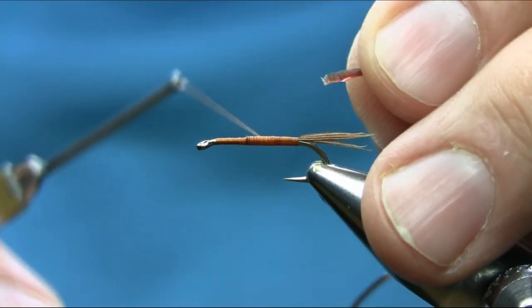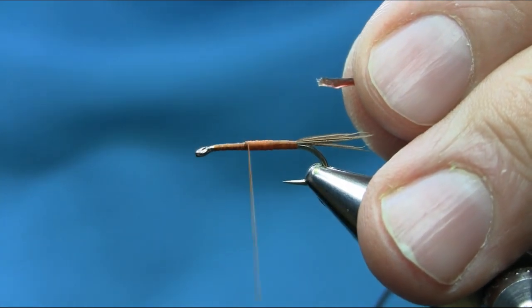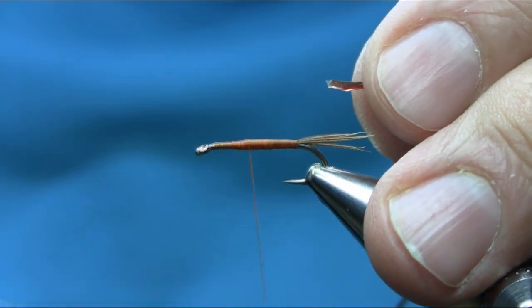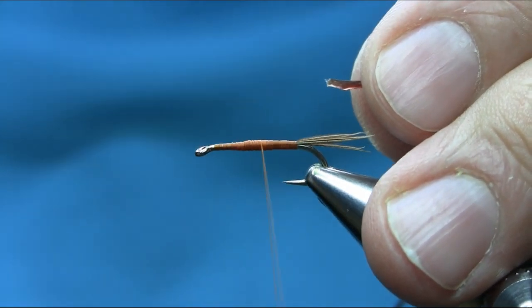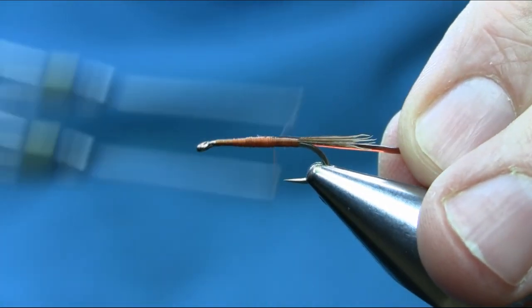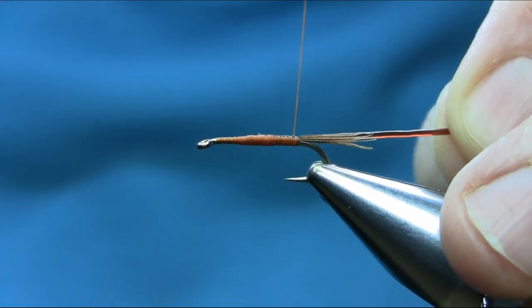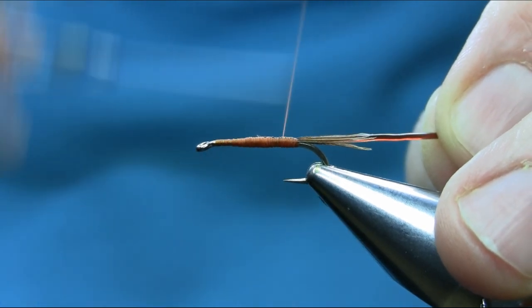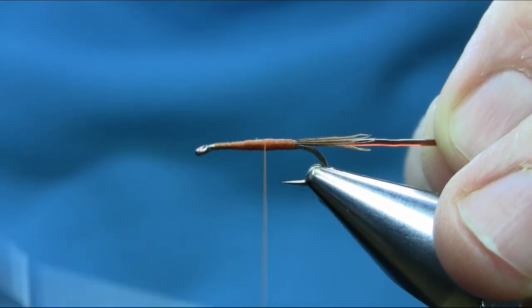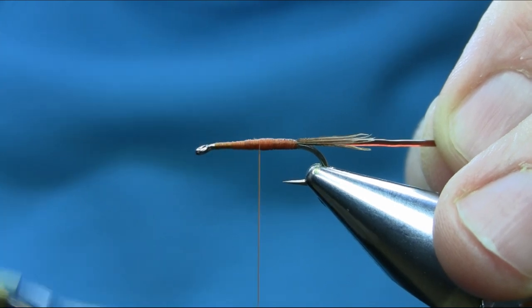So I'm just gonna come back up towards the head again because I need nice shape working with the body. Just catch that in the middle, secure this properly all the way to the tail, and come back. Just work with the body, it brings out a nice taper shape.